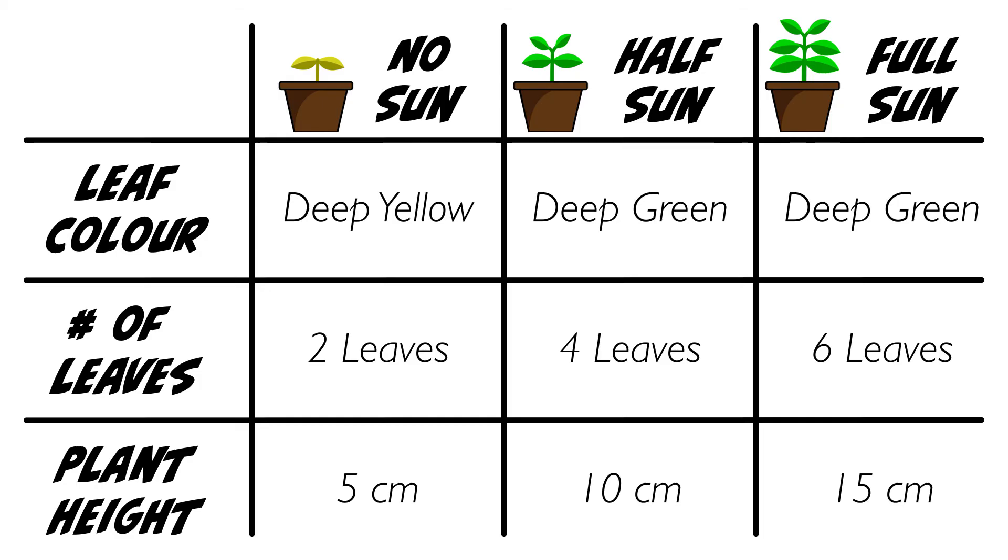Does our data refute or confirm our initial hypothesis that the plant with more sunlight grew better? Based on our observations, the plants that received the most sunlight grew the tallest, had the most leaves, and appeared the most deeply green of all test cases. Based on this data, we can indeed confirm that our hypothesis was correct. The plants receiving more sunlight did indeed grow the best.